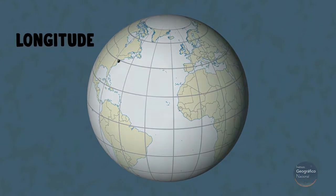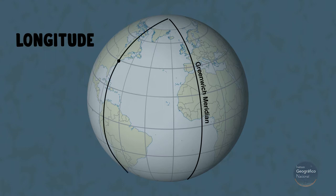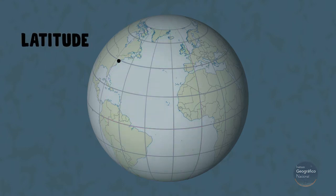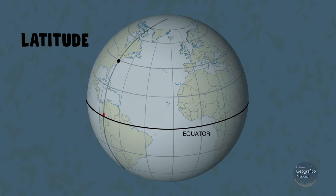Longitude is an angle measured from the equator, from the prime meridian to the meridian that passes over the point. Latitude is another angle; it is measured on any meridian from the equator to the point required.